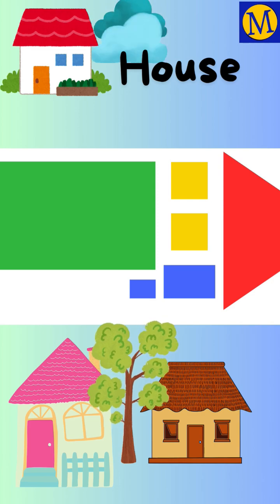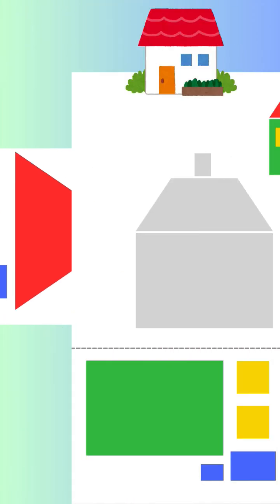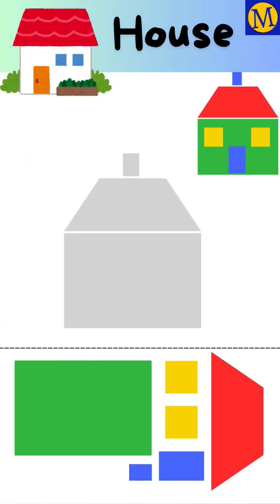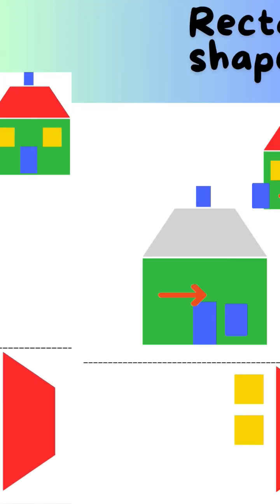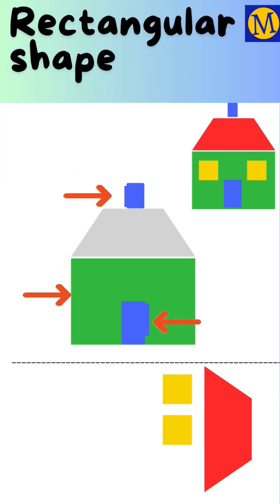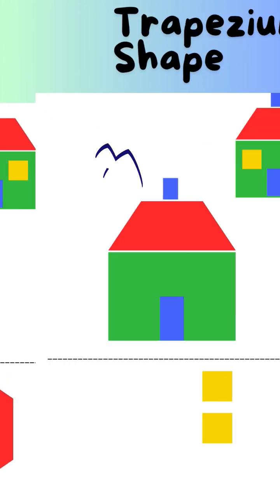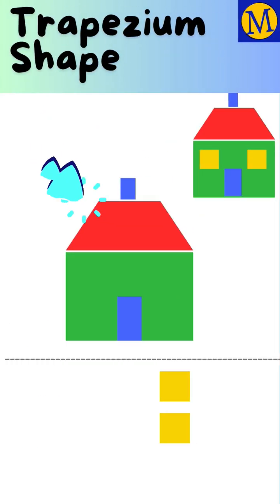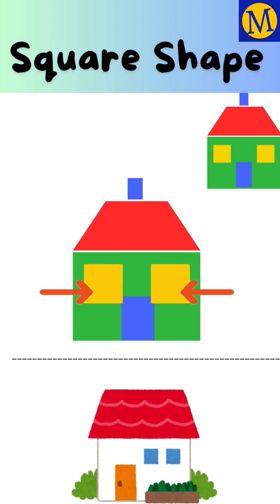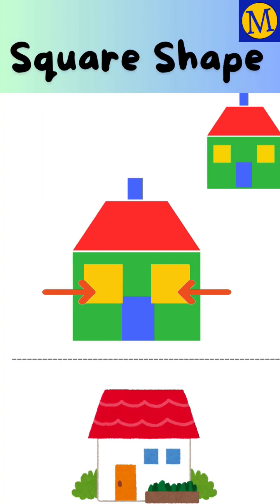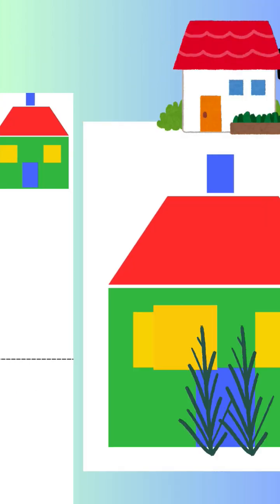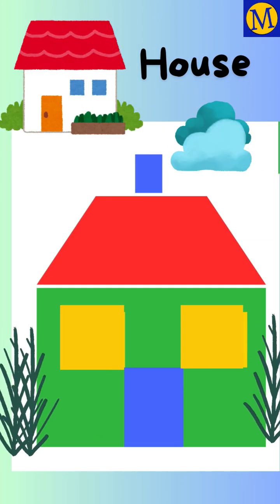Now, let's make a house with shapes. First, we arrange the rectangular shapes. Next, the trapezium shape for the roof. And, the square shapes for the windows. The house is ready.